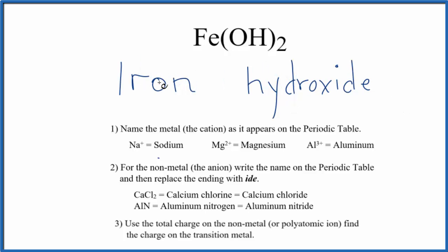And so far we have iron hydroxide, but iron is a transition metal. So when we have a transition metal, we look at what it's bonded to, either the nonmetal or the group of nonmetals in the polyatomic ion, to find that charge on the transition metal.